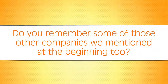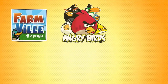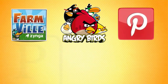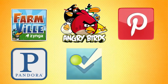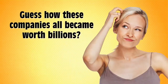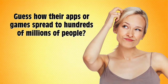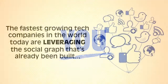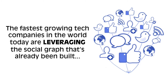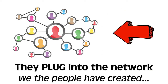Now, do you remember some of those other companies we mentioned at the beginning? Zynga, the makers of Farmville; Angry Birds from Rovio; Pinterest, Pandora, Foursquare, Instagram. Guess how these companies all became worth billions. Guess how their apps or their games spread to hundreds of millions of people. You guessed it — it was you. The fastest growing tech companies in the world today are leveraging the social graph that's already been built. They plug into the network that we, the people, have created.